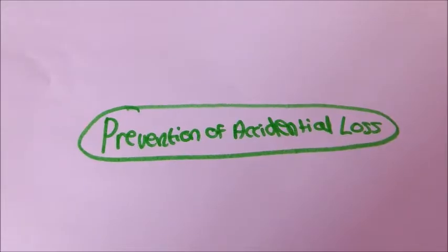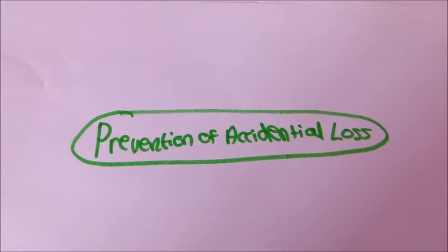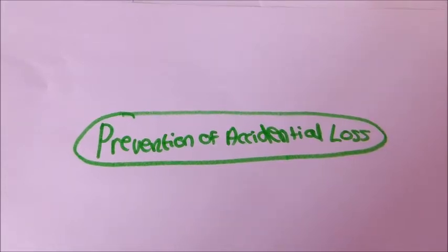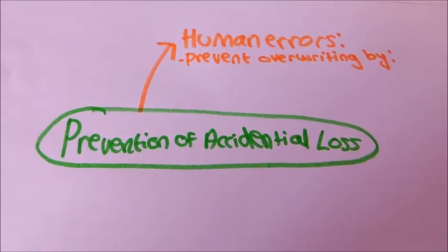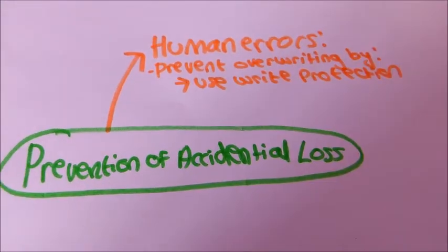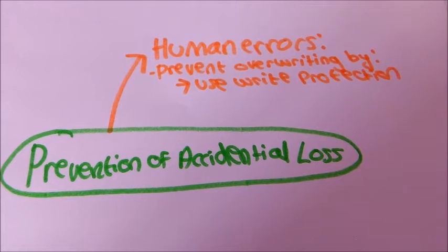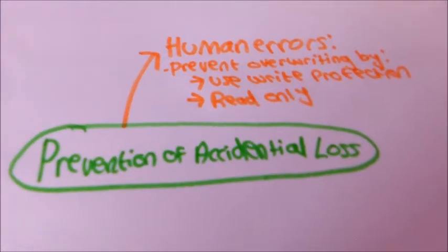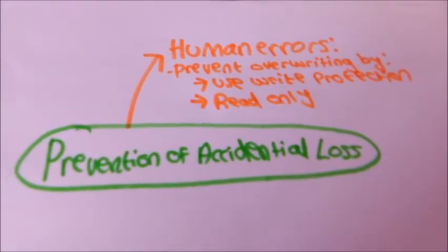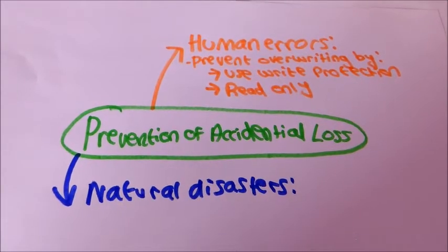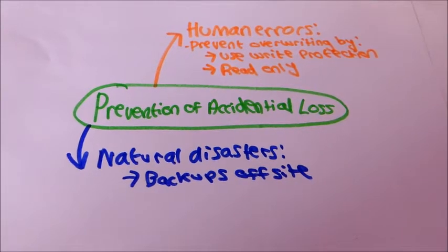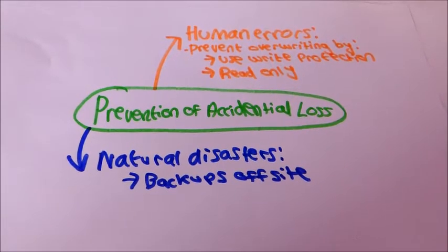We're now going to be talking about the prevention of accidental loss of data. To prevent human errors you can prevent overwriting by put the right protection notch on your disk and make sure that hard disks are read only. You can prevent natural disasters by keep backups off site and stored in a fireproof container.